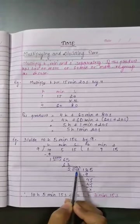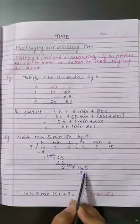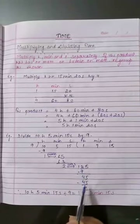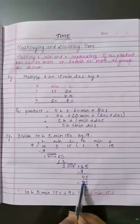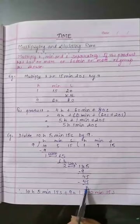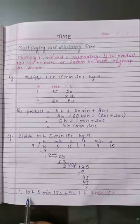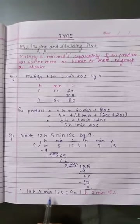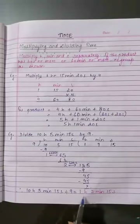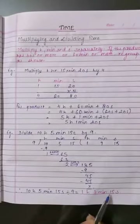2 minutes equals 120 seconds, and 120 plus 15 becomes 135. 9 ones are 9; 13 minus 9 is 4, giving 45. 9 fives are 45 and we are left with no remainder. Therefore 10 hours 5 minutes 15 seconds divided by 9 equals 1 hour, 7 minutes, 15 seconds.